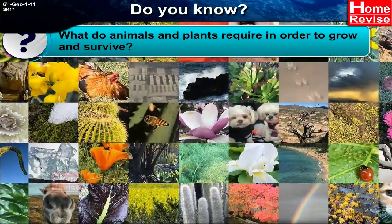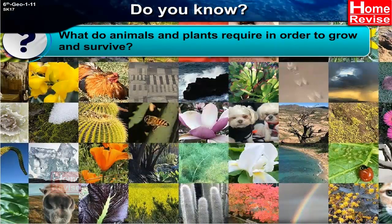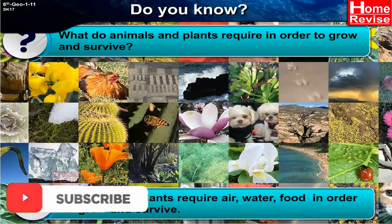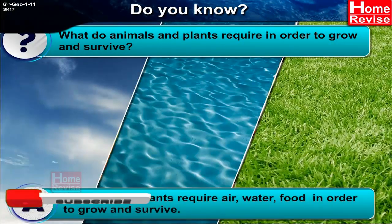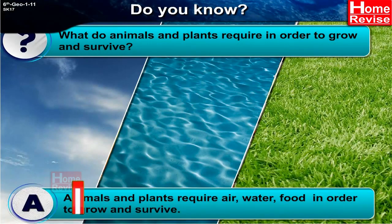What do animals and plants require in order to grow and survive? Animals and plants require air, water, and food in order to grow and survive.